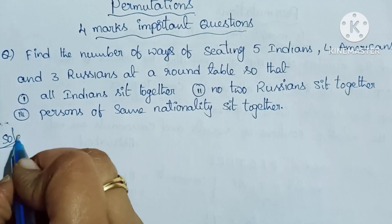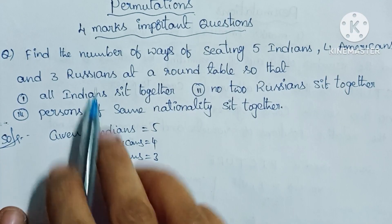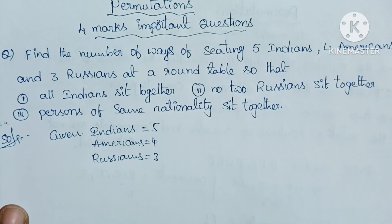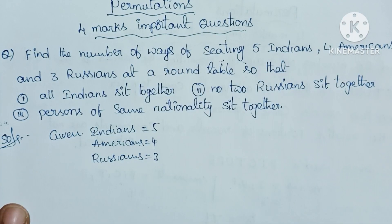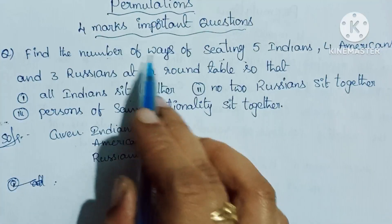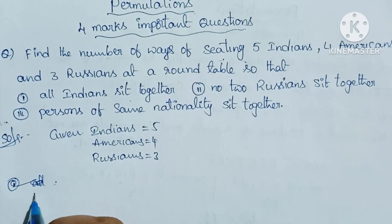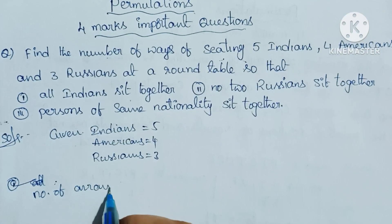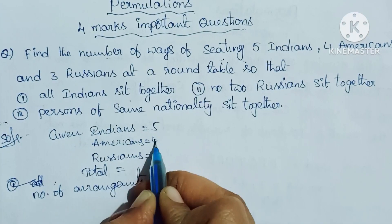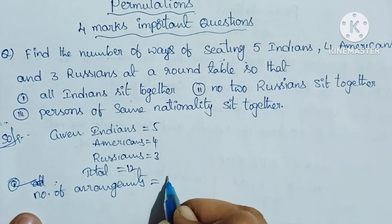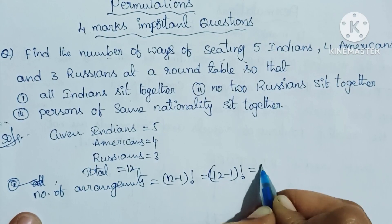The solution begins with the given data: Indians = 5, Americans = 4, Russians = 3. For circular table arrangement, total persons = 5 + 4 + 3 = 12 members. The number of arrangements for 12 members at a circular table equals 11 factorial.